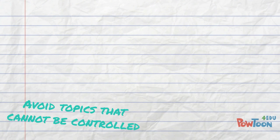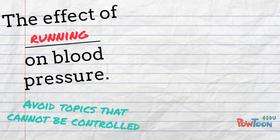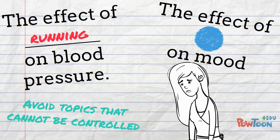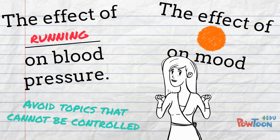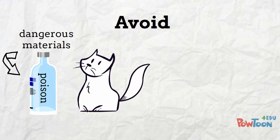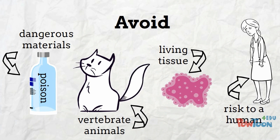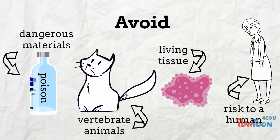Stay away from topics which cannot be easily controlled during an experiment. For example, the effect of music, games, or running on blood pressure, or the effect of color on mood — there are too many variables affecting these topics for us to isolate and test just one. Avoid topics that involve dangerous materials, harm vertebrate animals, living tissue samples, or pose physical or psychological risk to a human.